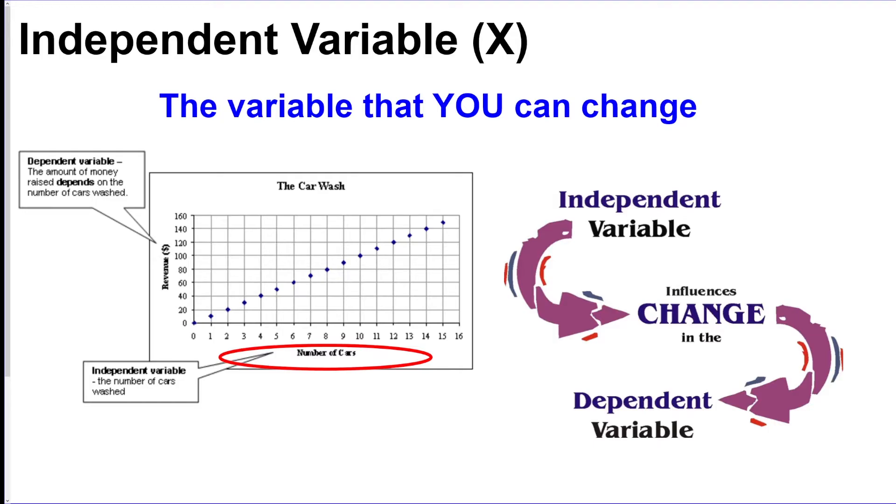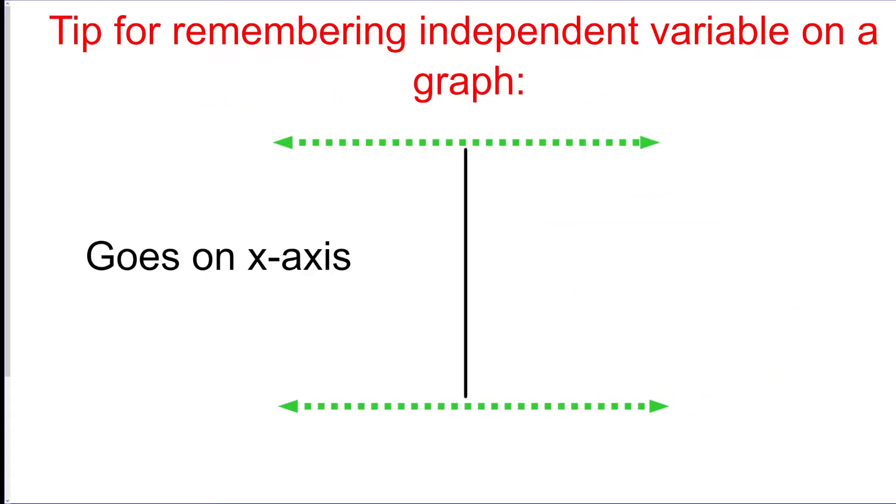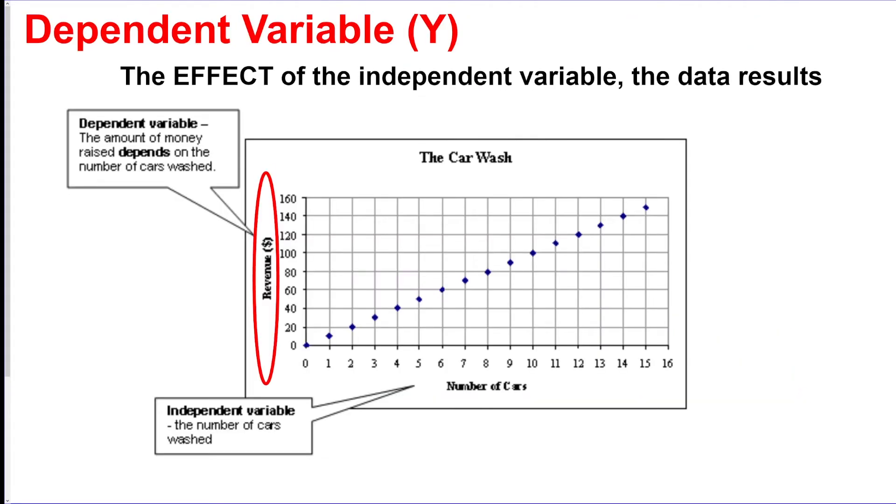The independent variable: this is the part of the experiment that you're changing. You can remember this by a capital I looking like independent. If you draw an I, you could put there the little arrows, and that means that the independent variable will always be on the x-axis on the bottom.